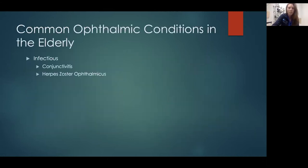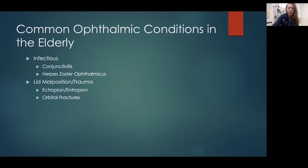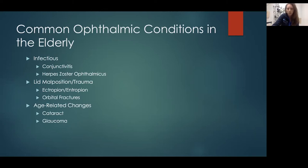What are some common ophthalmology conditions in the elderly? I like to group them into categories: infectious, such as conjunctivitis and herpes zoster ophthalmicus; lid involutional changes — malposition and trauma — which can lead to ectropion or entropion, where the lid is falling off the eye or turning in and hitting the cornea; orbital fractures, which are very common since the bones of the orbit are very thin; age-related changes such as cataracts and glaucoma; and metabolic changes like diabetes, which we see a ton of, with very advanced diabetic disease in the back of the eye leading to blindness.